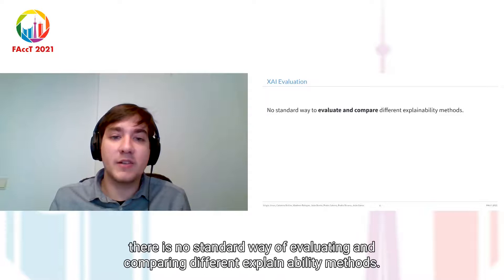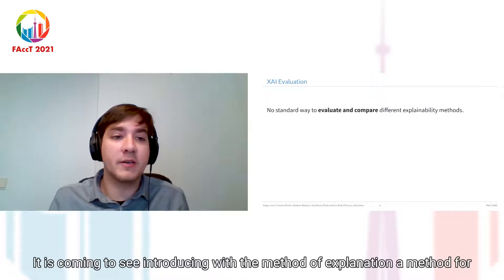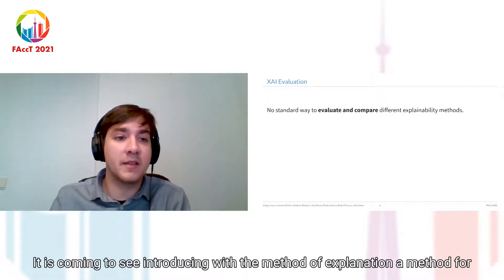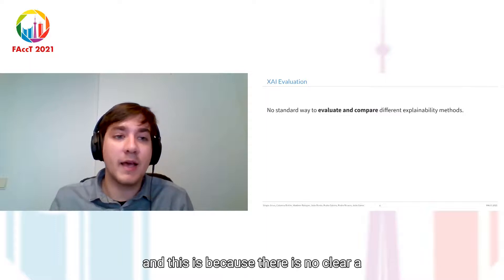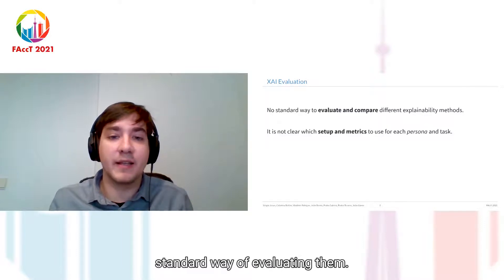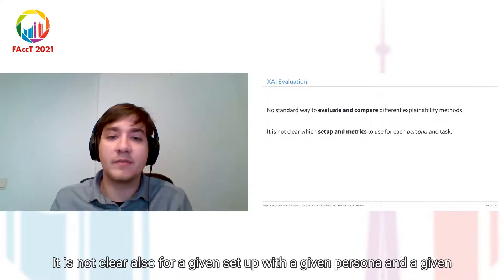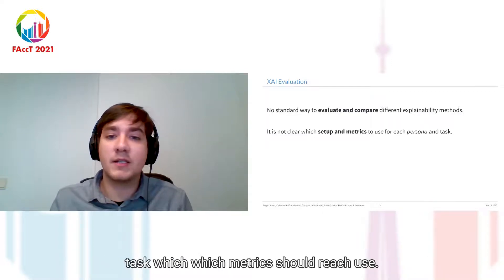As of today, there is no standard way of evaluating and comparing different explainability methods. It is common to see, when introducing a new explanation method, a method for evaluation also introduced alongside it. This is because there is no clear standard way of evaluating them. It is not clear also, for a given setup with a given persona and a given task, which metrics we should choose.